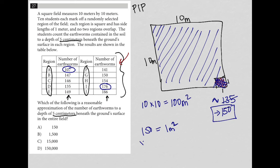Well, that's just multiplying that 150 by 100, in which case we would get 15,000 earthworms, which makes choice C make the most sense.